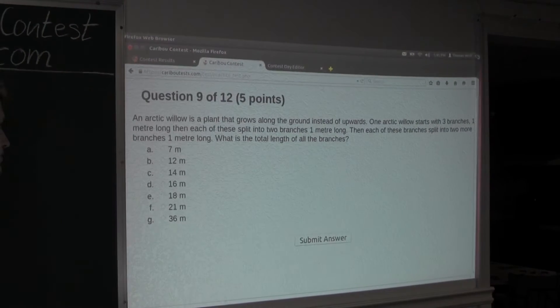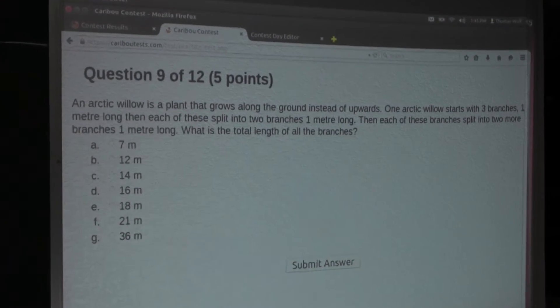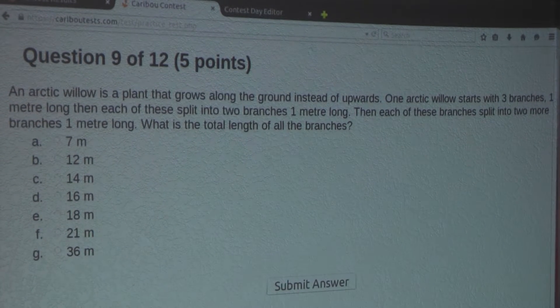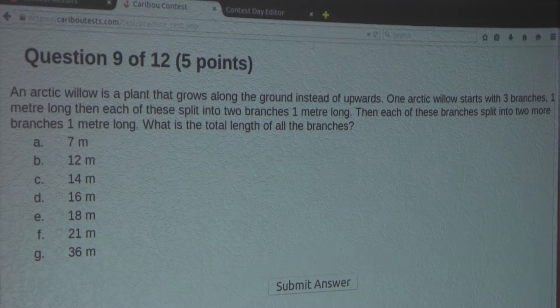So the question is, an arctic willow is a plant that grows along the ground instead of upwards. One arctic willow starts with three branches, one meter long.